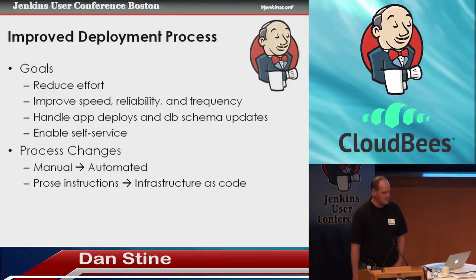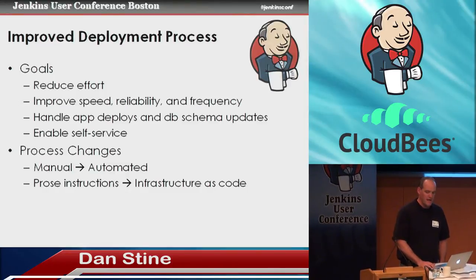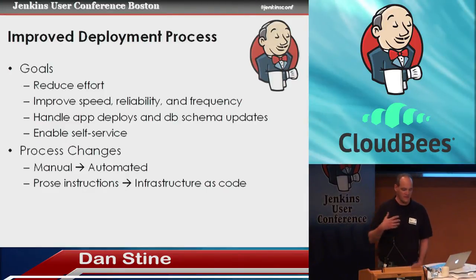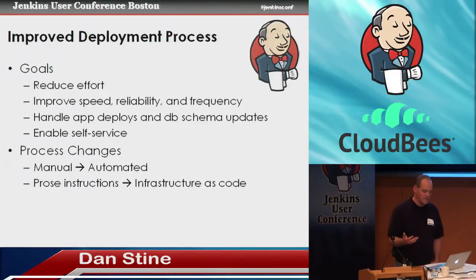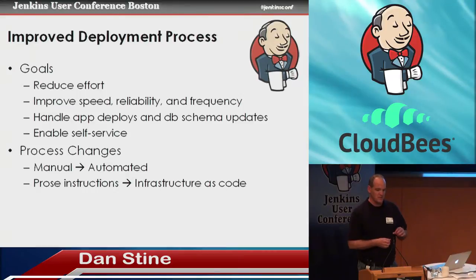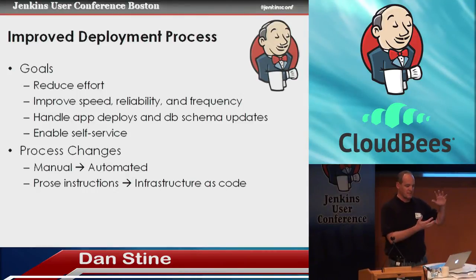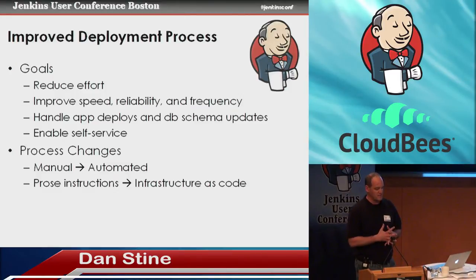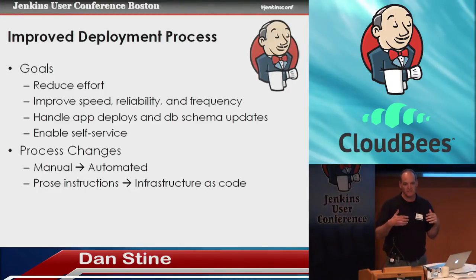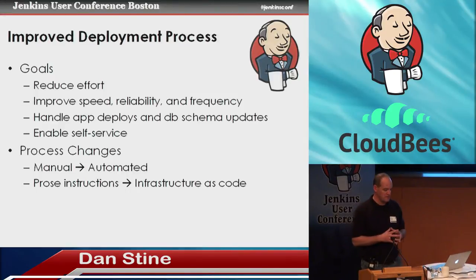Our deployment process goals were the usual improvements: speed, reliability, frequency. We wanted to enable self-service — design a framework where we can help developers deploy to the development environment and operations deploy to other environments, but over time let the QA staff deploy to their test environments themselves instead of going through intermediaries. We do that by automating and adopting the principles of infrastructure as code — moving from a process where a tech lead writes a Word document illustrating how to install and configure software to capturing that configuration as code, and what's left behind is higher-value operational knowledge.